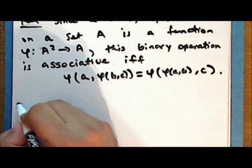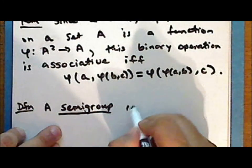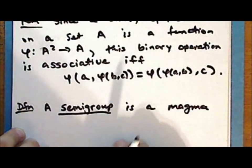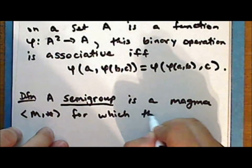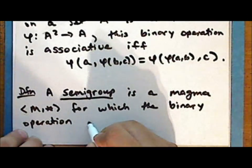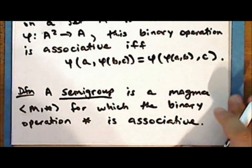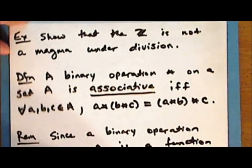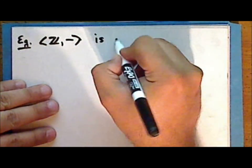New definition: a semigroup is a magma for which the binary operation is associative. As a counterexample, we will show that the magma consisting of the integers under subtraction is not a semigroup.